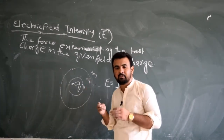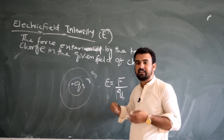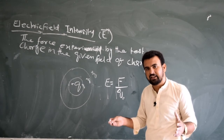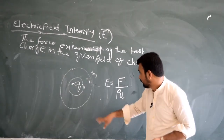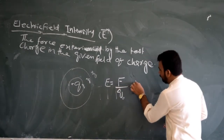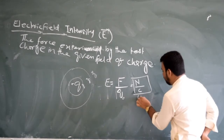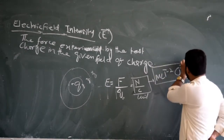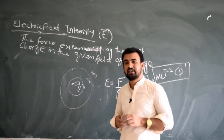When we have a positive test charge, what happens — there is a repulsion force from the source charge. The force on this charge can be called force per unit charge, which means the unit is Newton per Coulomb. This dimension is MLT minus 2 Q inverse. This is the dimension of electric field intensity.